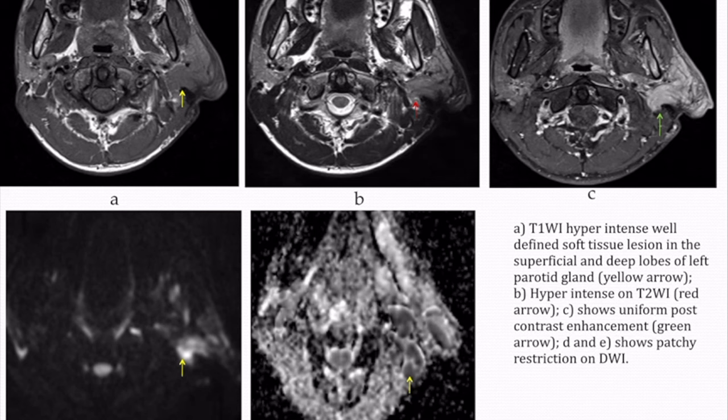Axial MRI images showed a T1 hypo-intense well-defined soft tissue lesion in the superficial and deep lobe of the left parotid gland, hypo-intense on T2-weighted images, with homogenous post-contrast enhancement and patchy areas of diffusion restriction. This was a known case of Kimura disease, with parotid gland involvement by the same disease process.